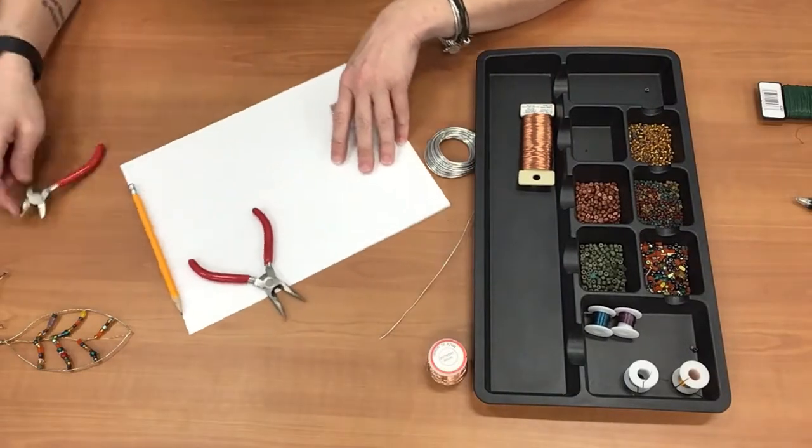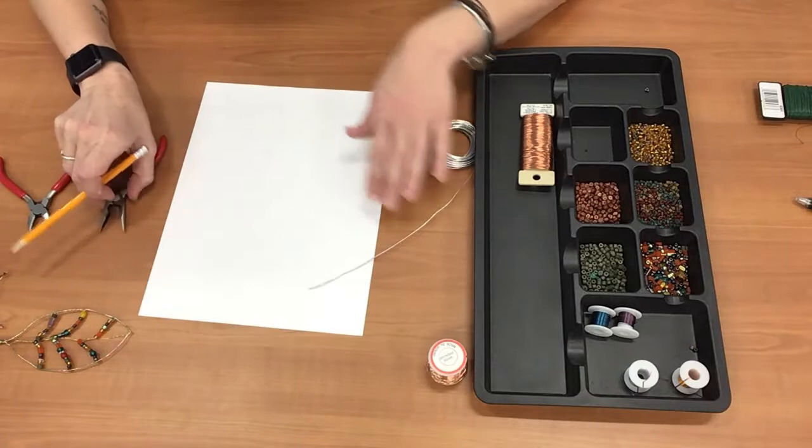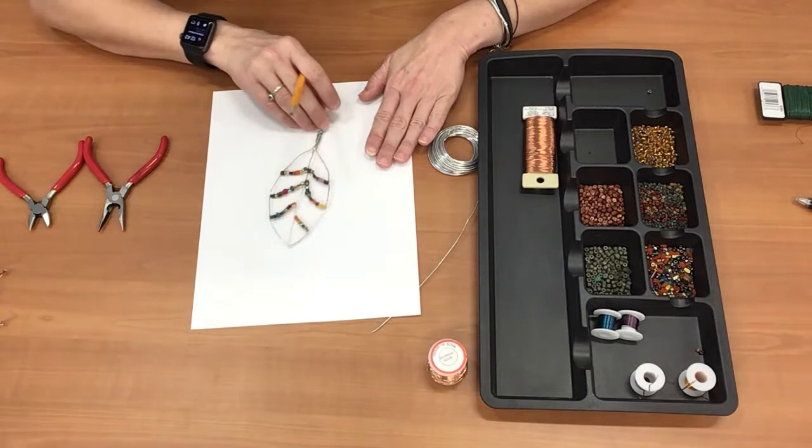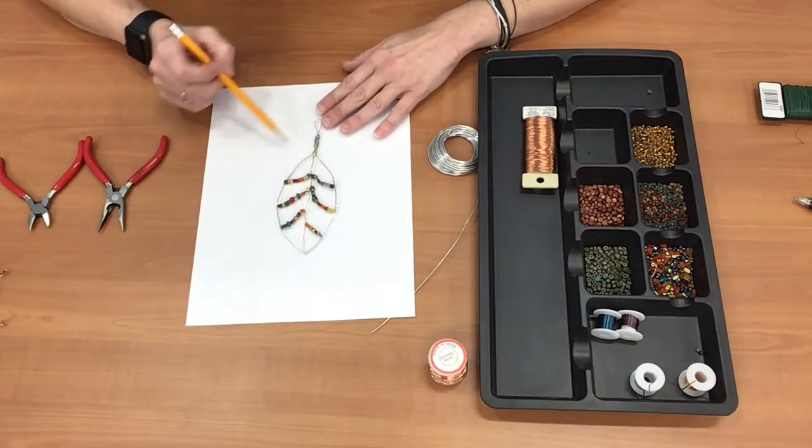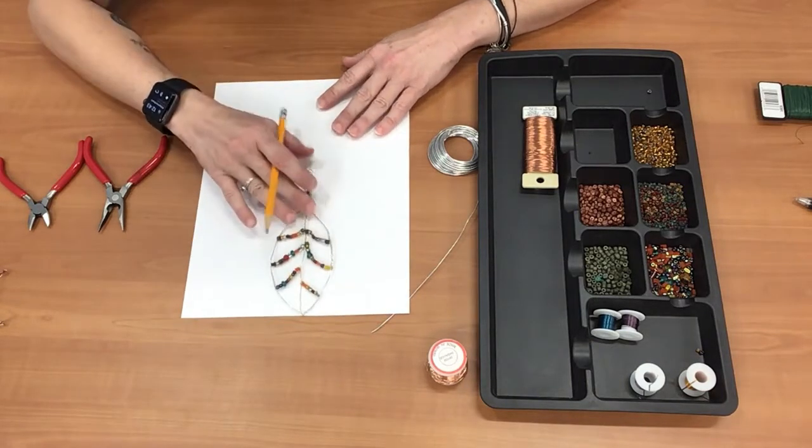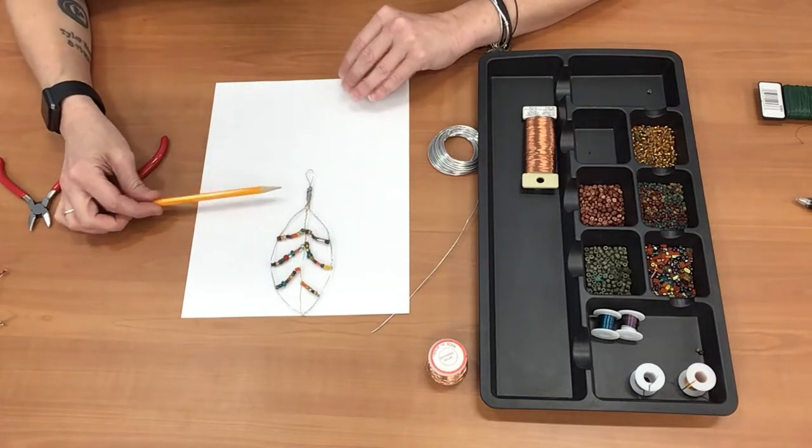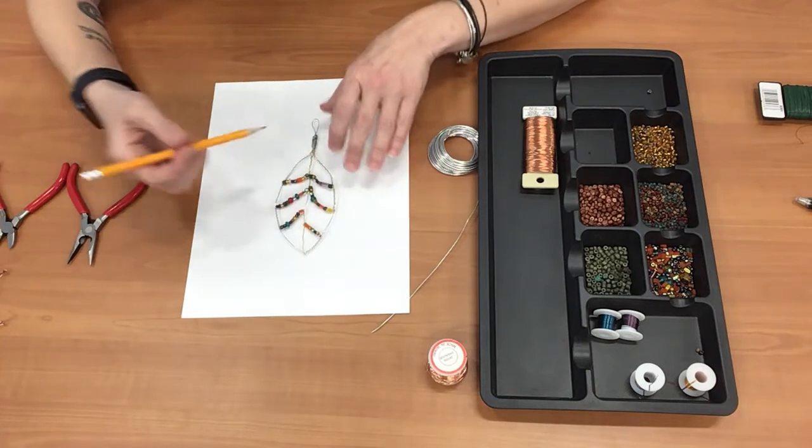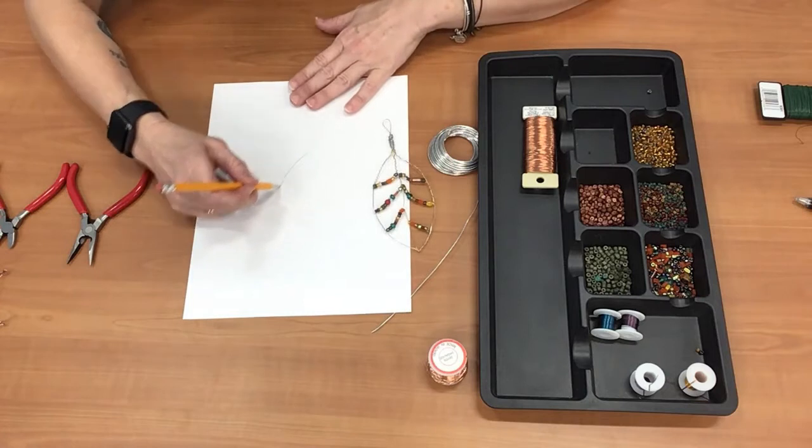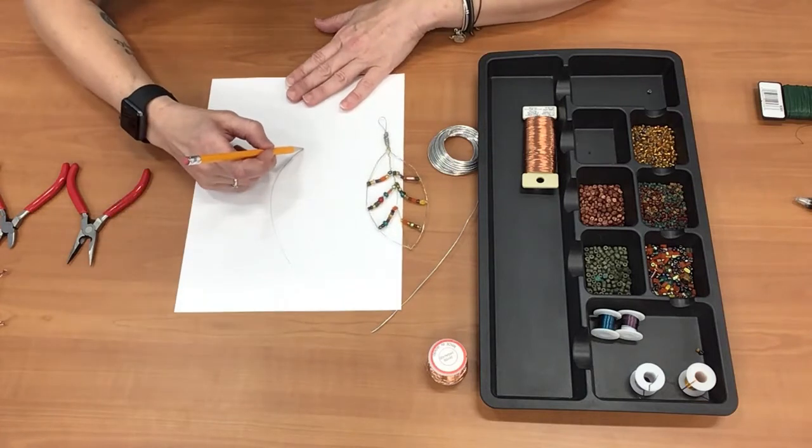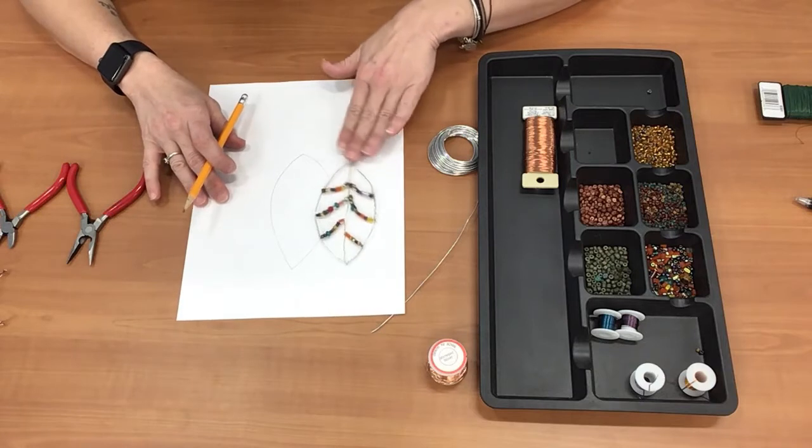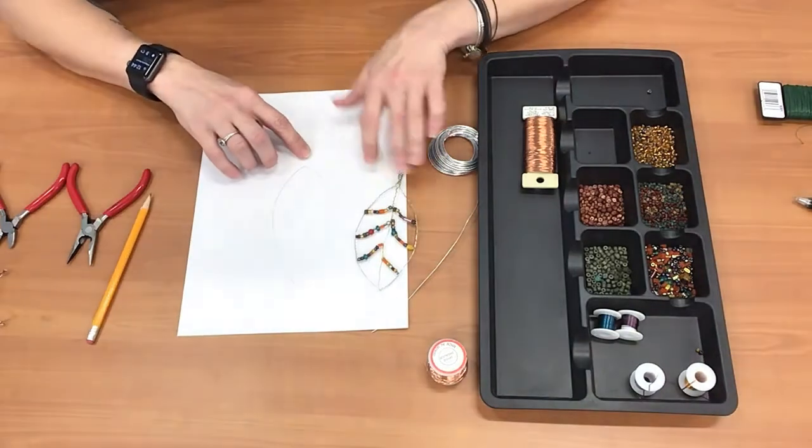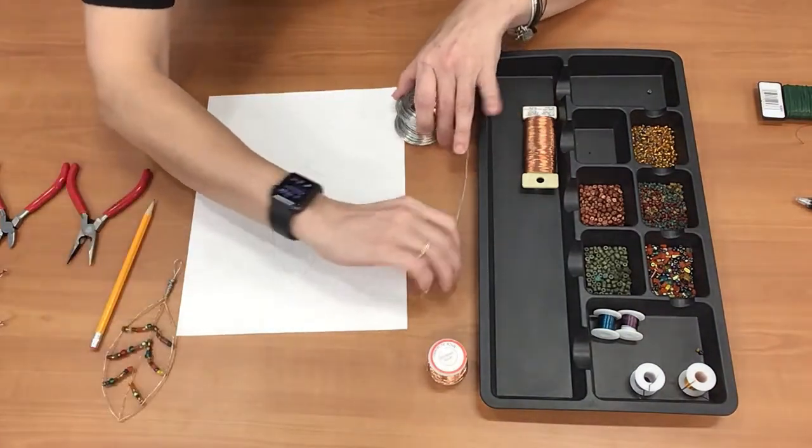So first thing you're going to do is you're just going to draw your leaf. Now when I made this one I just drew a super basic leaf. You can see that it's about half the size of the paper. You can make them smaller or bigger. So this one's going to be about the same. And we're going to use this as a guide to measure and cut our wire.